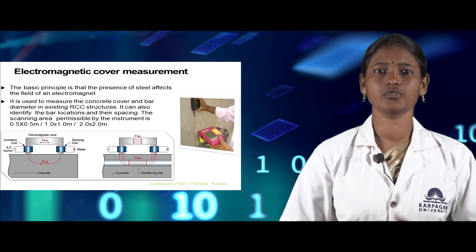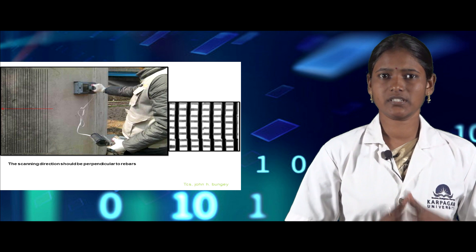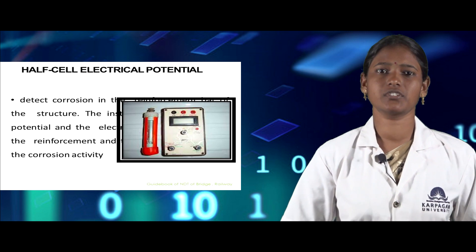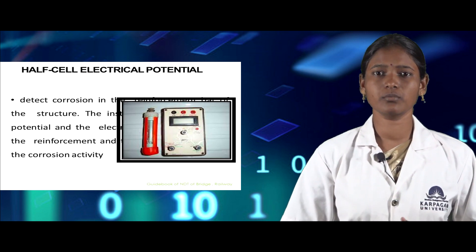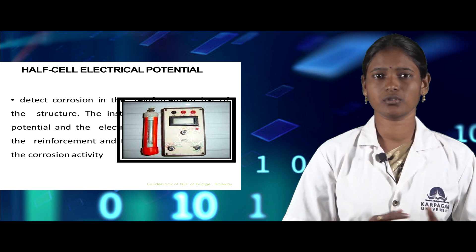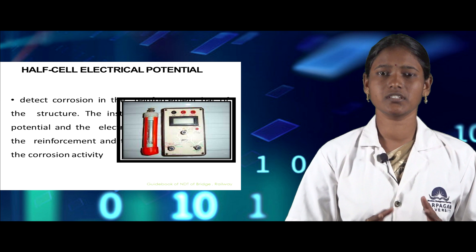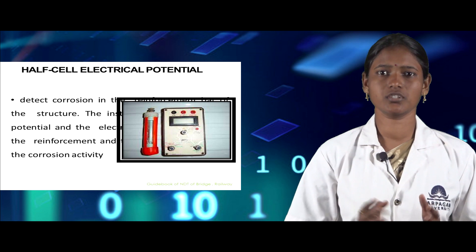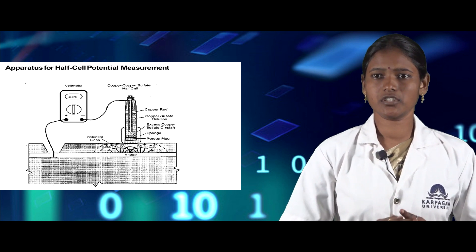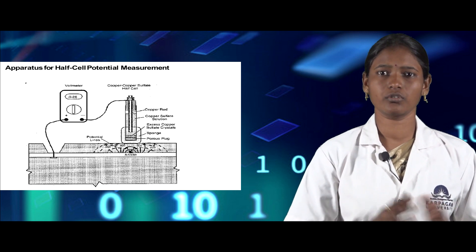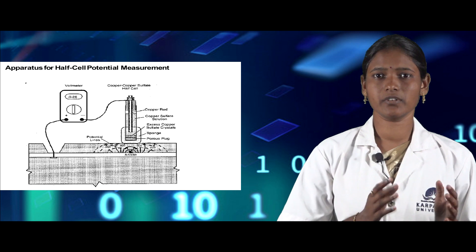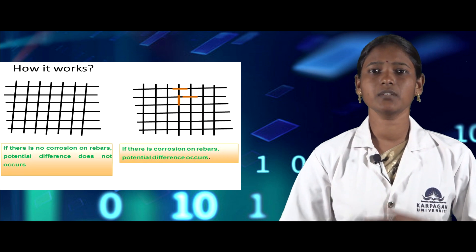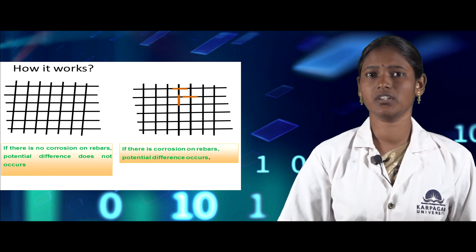The next non-destructive testing technique is the half cell electrical potential test, which is used to detect corrosion in the reinforcement of a structure. The corrosion potential is measured and the electric charges passing through the reinforcement are also measured to determine corrosion activity. The apparatus consists of a voltmeter and a copper sulphate half cell. In the absence of corrosion in rebars, no potential difference occurs; when corrosion is present, a potential difference is detected.